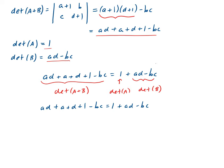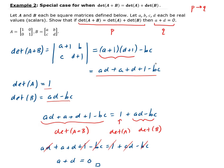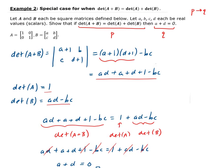Simplifying: the 1's cancel out, BC cancels out, and AD cancels out. So we're left with A plus D equals 0. That's what we wanted to show — this is our conclusion Q. So this is the proof of this statement.